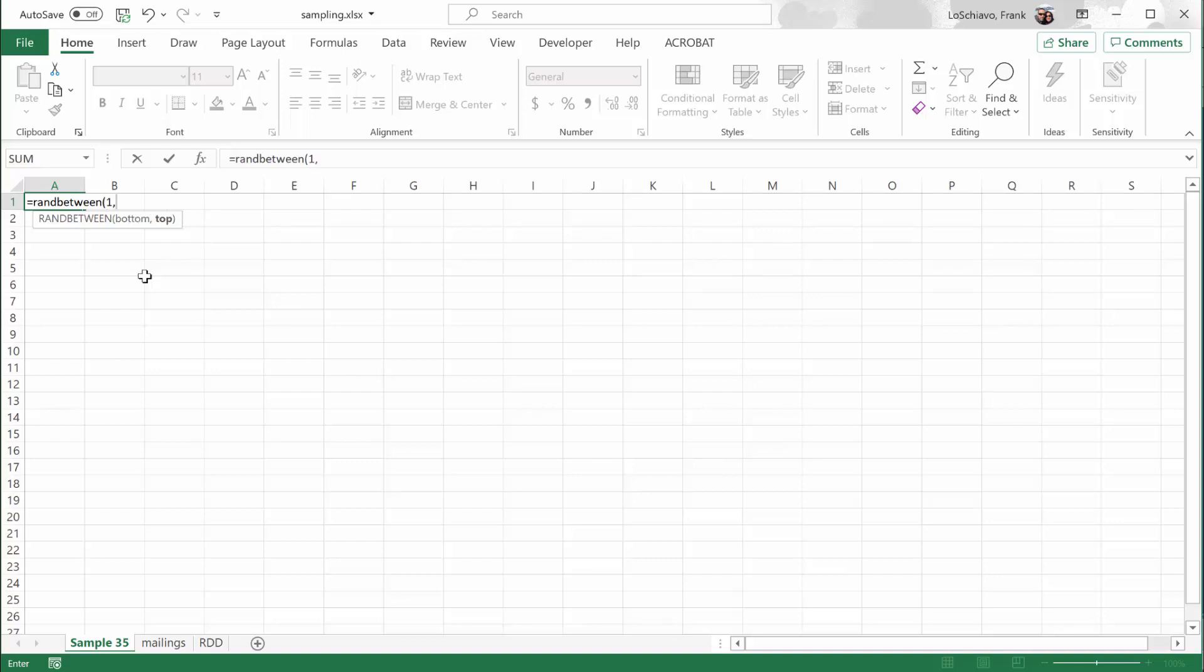Now Excel is saying, what's the highest number you want to select from? 35. Because in our example, we have 35 students and we want to randomly select five of those 35. So now all I need to do is hit enter.